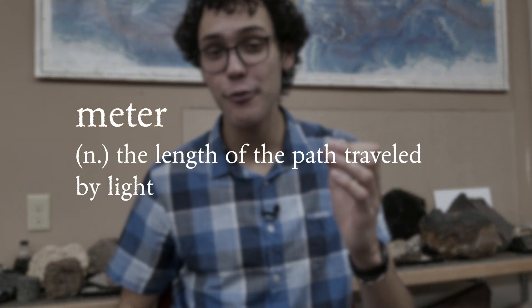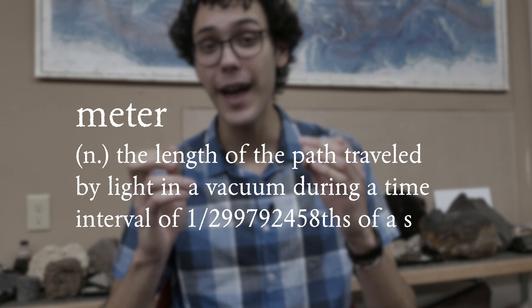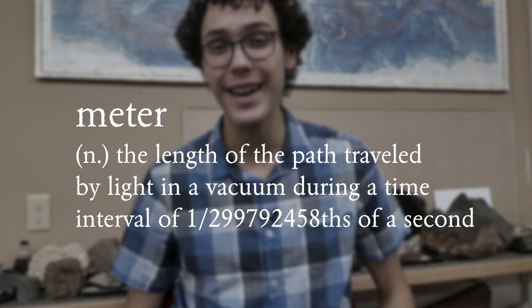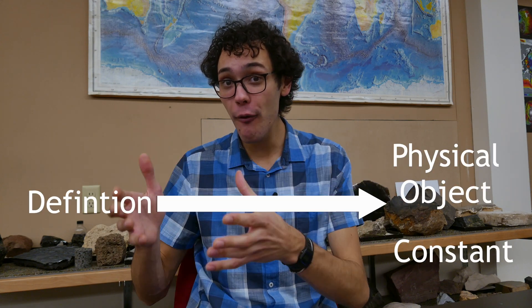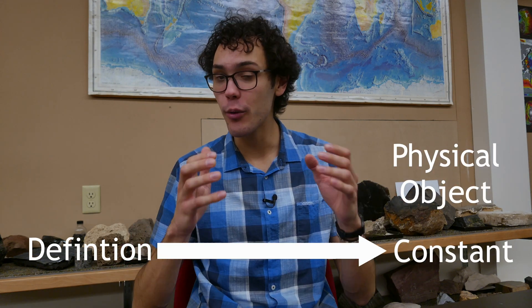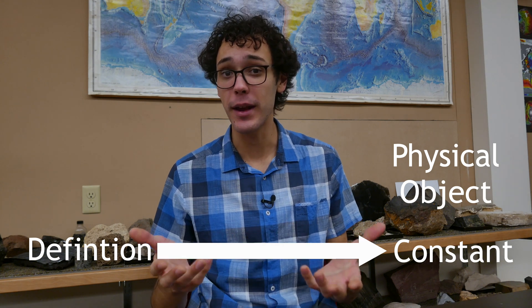So in 1983, the meter was changed to be the length of the path traveled by light in a vacuum during a time interval of 1 over 299,792,458ths of a second. That fraction chosen because it was the closest approximation to the existing standard. And just like that, they moved the definition off a physical object and onto a constant of nature, the speed of light.